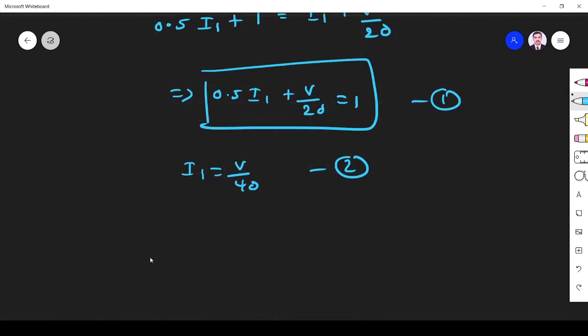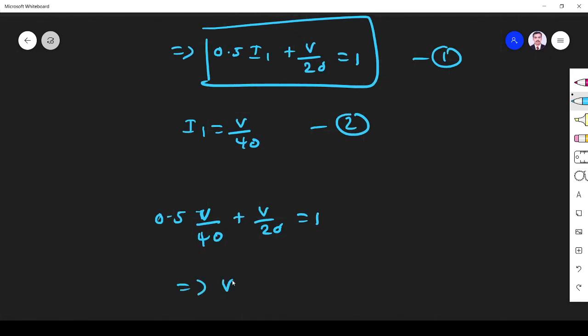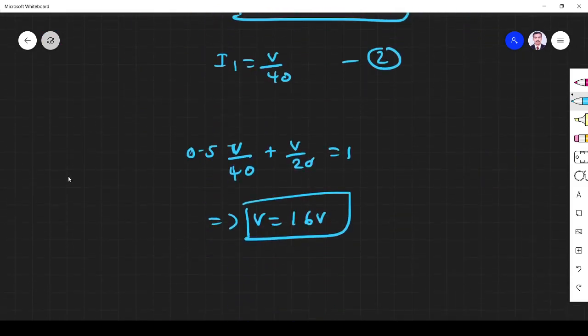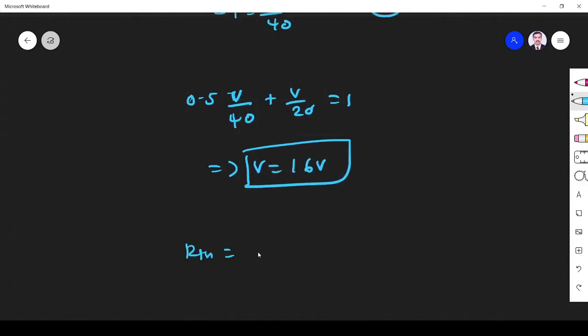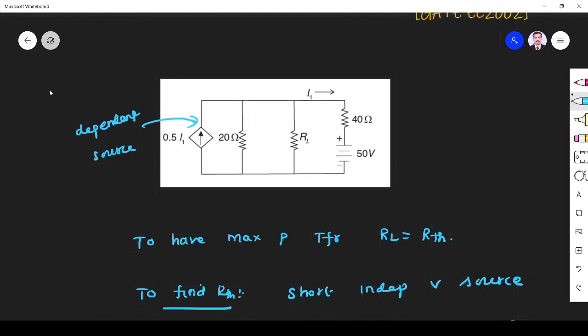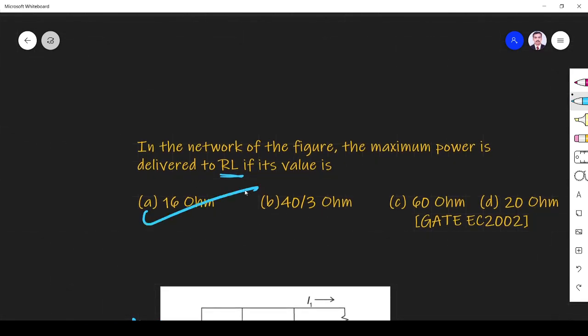So if you simplify, substitute two in one. So 0.5 V by 40 plus V by 20 is equal to 1. This implies V is equal to 16 volts. Now we got V. What about R-thevenin? R-thevenin is equal to, I told, V by 1 ampere. So R-thevenin is equal to 16 volts divided by 1, 16 ohm. So the answer, Thevenin's resistance is 16 ohm. So option A is the right answer. Thank you.